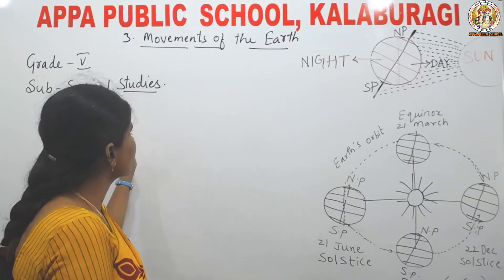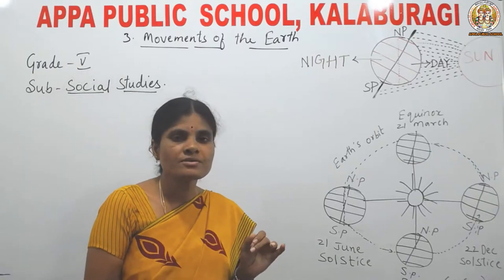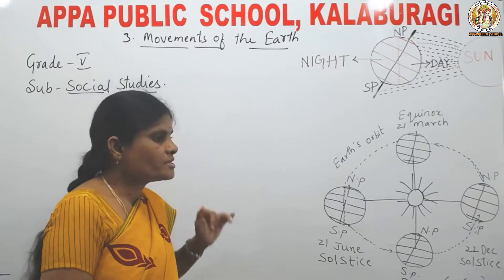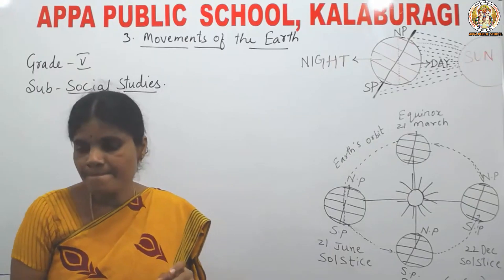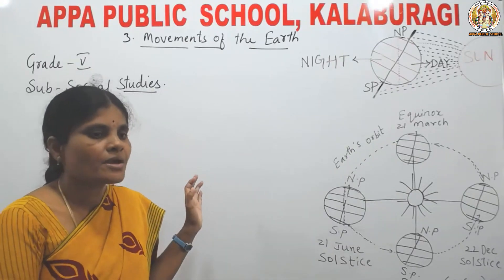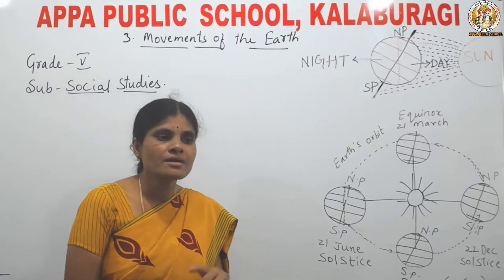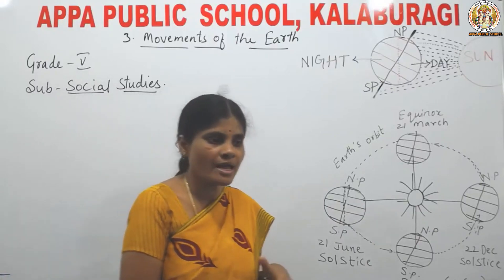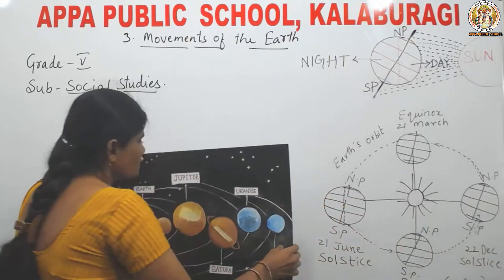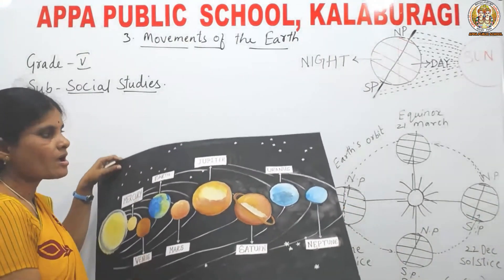Now in this class we are going to learn about movements of the earth. The earth is a planet. There are eight planets. They are Mercury, Venus, Earth, Mars, Jupiter, Saturn, Uranus, and Neptune. These are the eight planets we have.